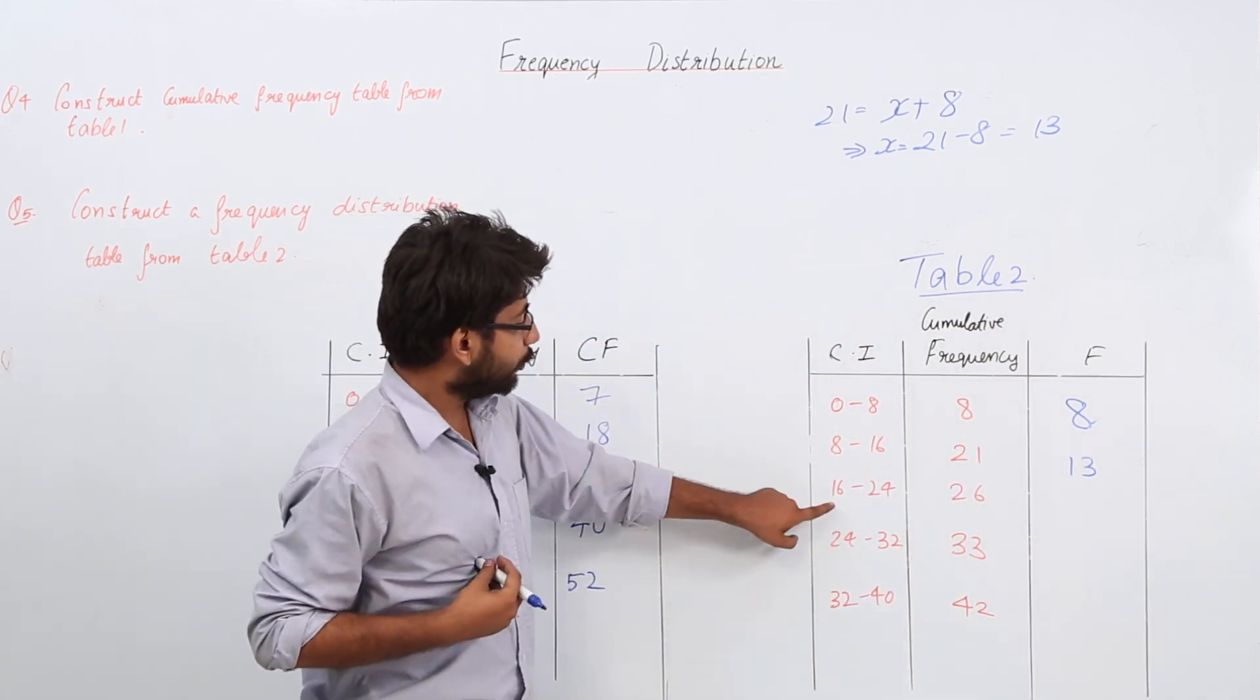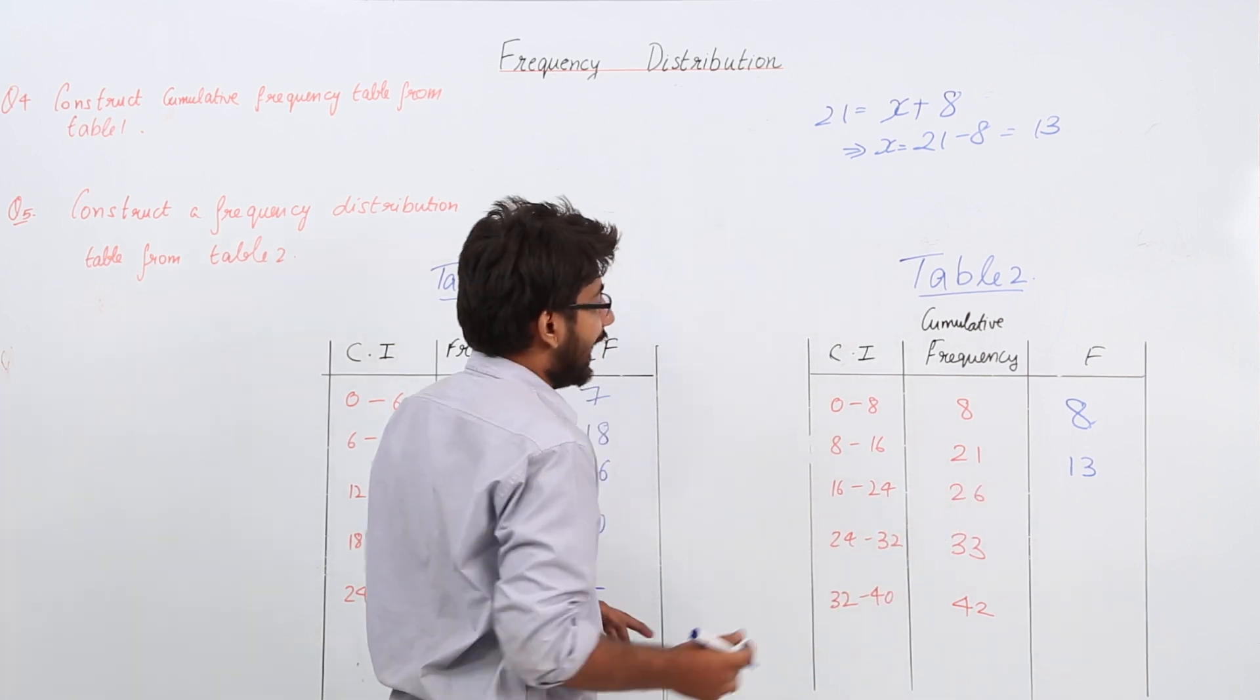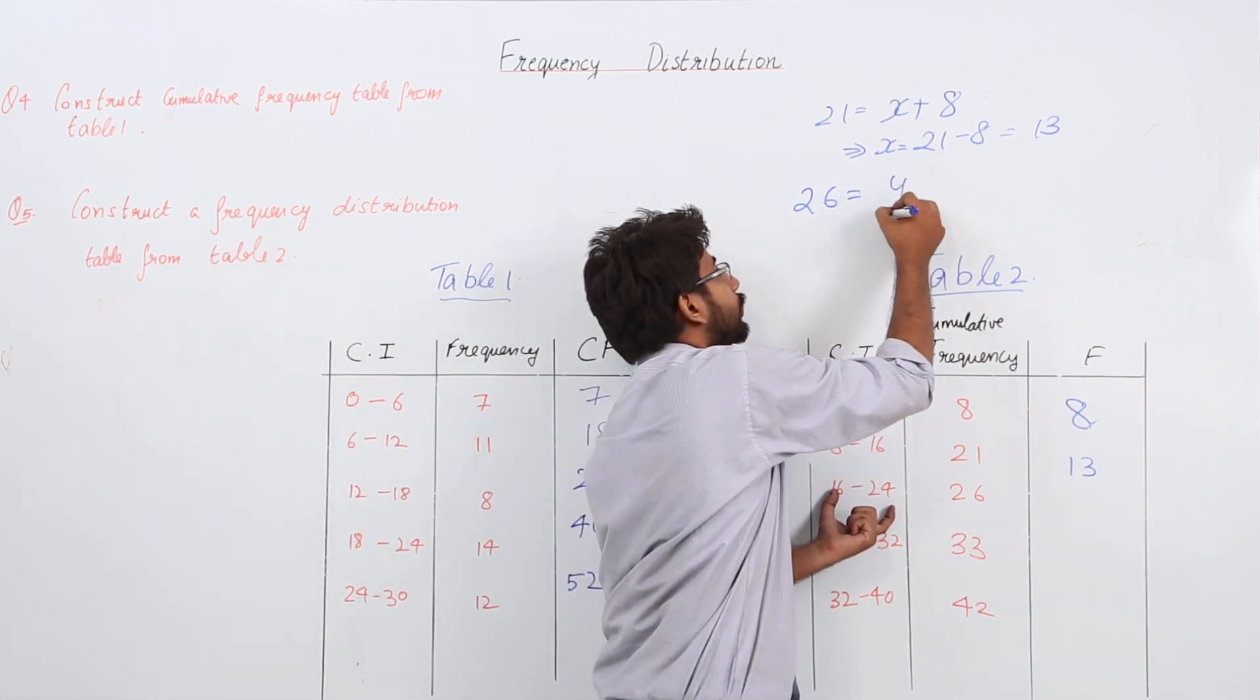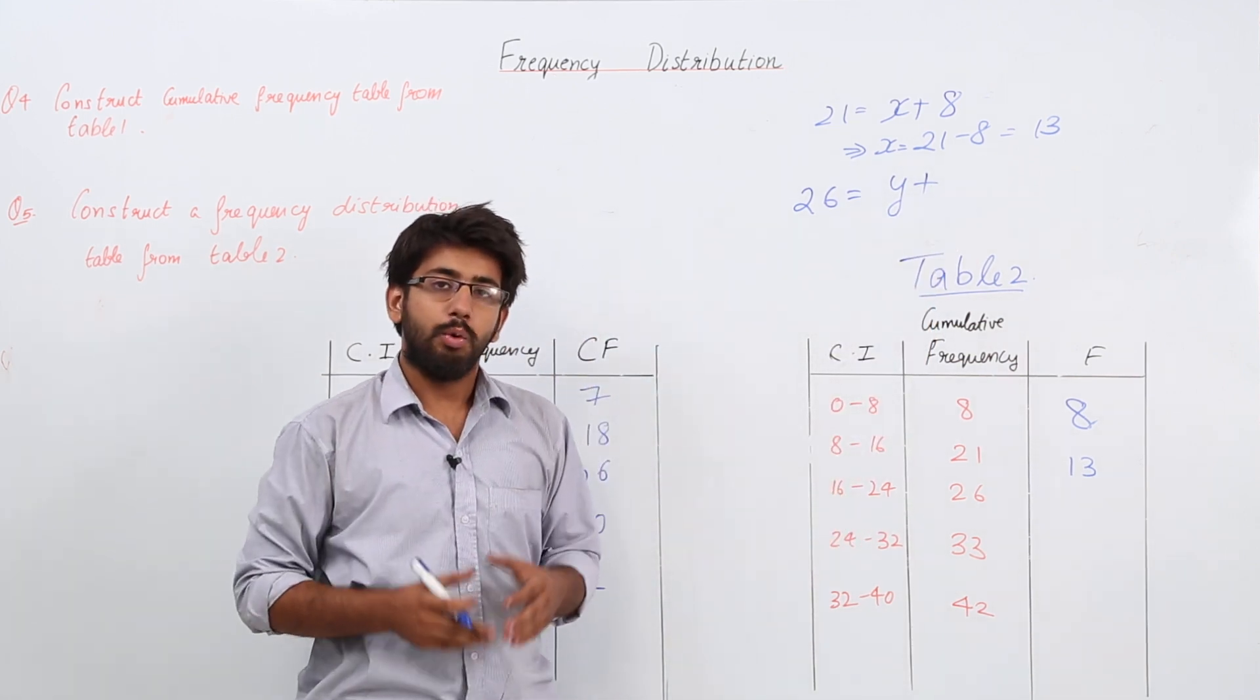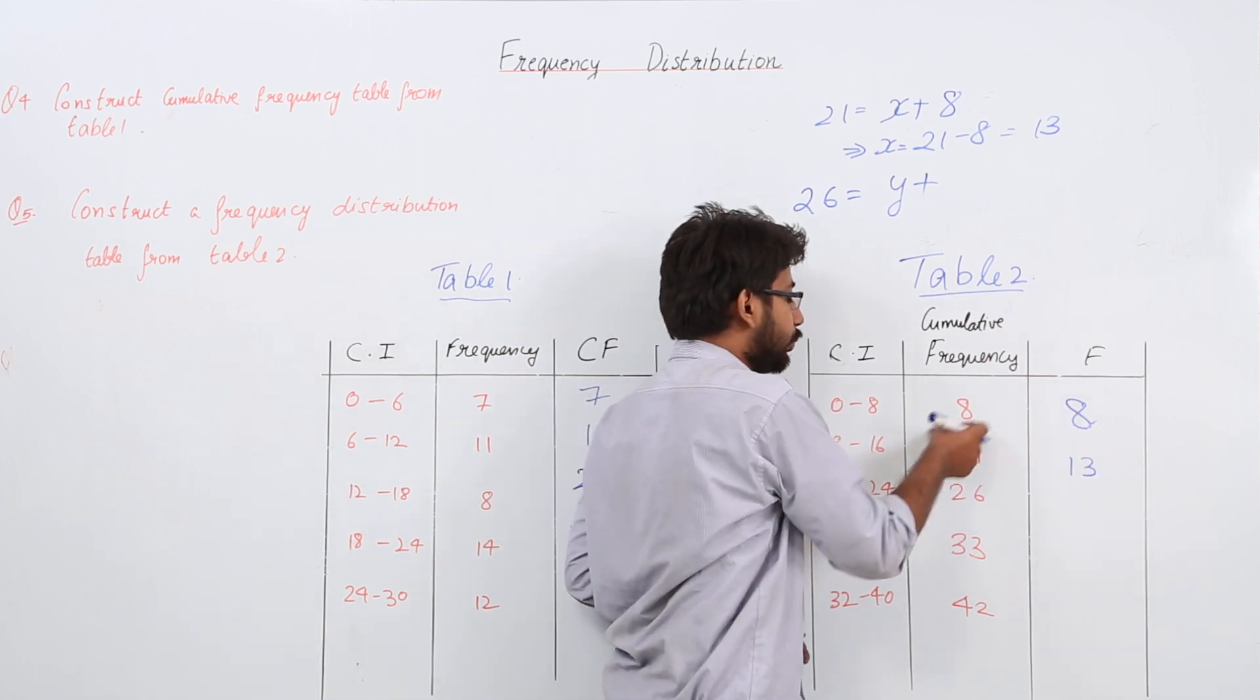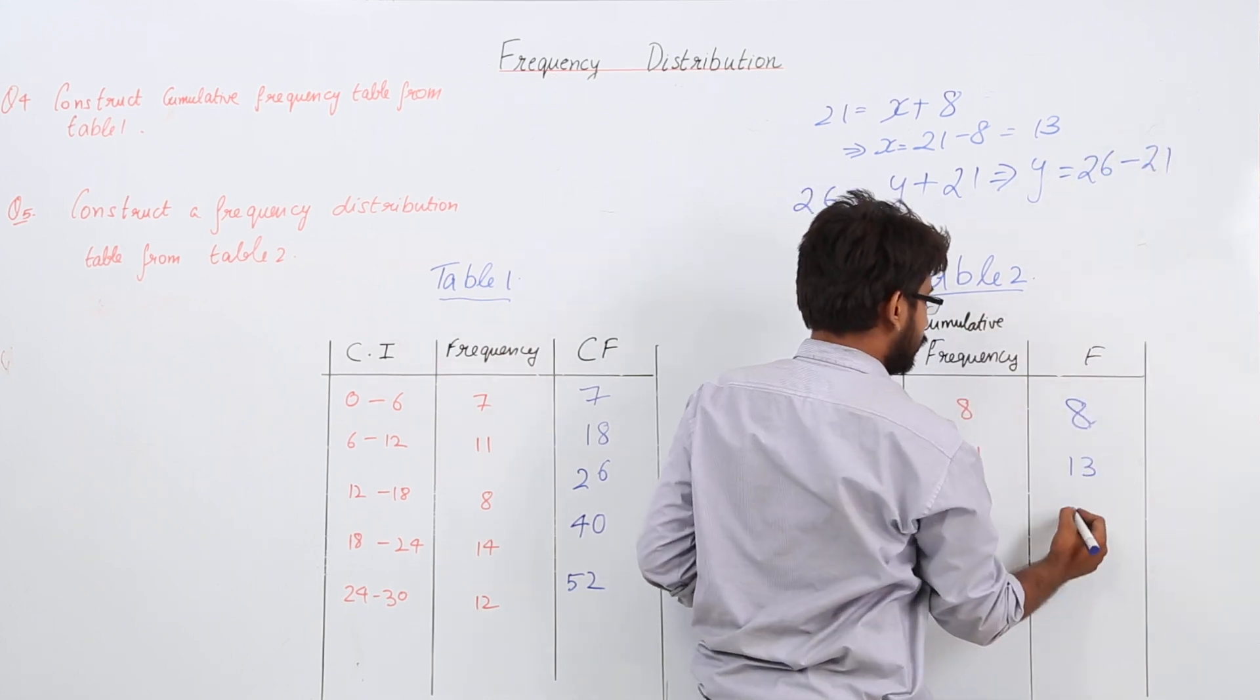How do we find the frequency of this class interval 16 to 24? The value of CF is 26, so we write 26 equals the frequency of this class. Let's say it equals y plus the frequency of all the previous classes. What is the sum of the frequencies of all the previous classes? It is 8 plus 13, which equals 21. So y equals 26 minus 21, which equals 5.